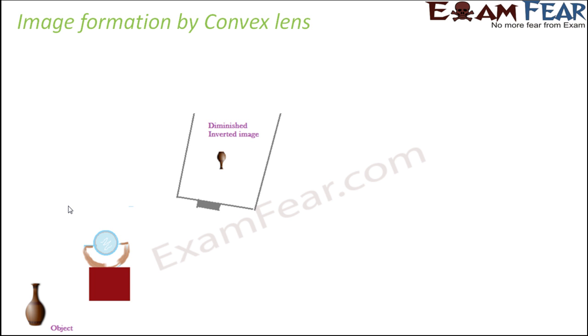Let us now talk about image formation by convex lens, the way we discussed about mirrors. Now we are going to discuss about lens. Remember one thing: the image formed by the lens can be seen from the side opposite to that of the object. So when you have the object here, this is the lens, and then you get to see the image here. You actually need to see through the lens in order to view the image. In case of a convex lens, image formation is going to be similar to that of a concave mirror.